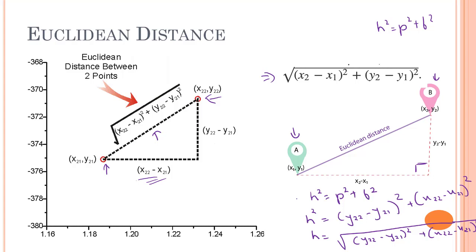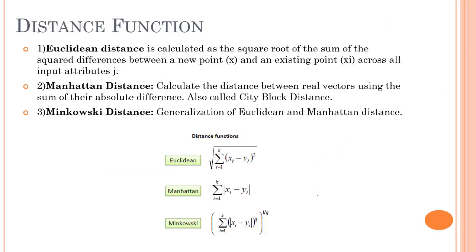Now that we've covered Euclidean distance, let's look at the other different distance functions we can apply on the KNN algorithm. There are three distance functions. First, Euclidean distance — already known — calculated as the square root of the sum of squared differences between the new point x and an existing point xi across all input attributes. Second is Manhattan distance, which calculates distance between real vectors using the sum of their absolute differences. It is also known as city block distance, and Google Maps probably uses Manhattan distance to calculate distances on their map.